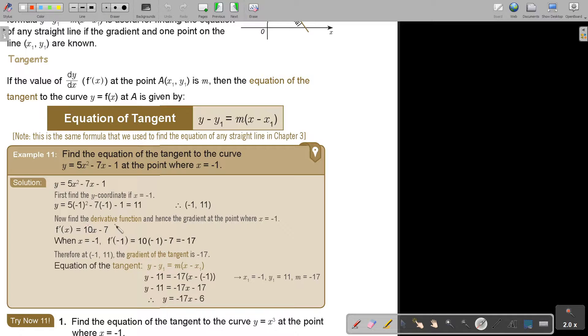Now find the derivative function. So we're going to differentiate and hence the gradient at the point where x is negative 1. So we differentiate and we get 10x minus 7. Then when x is negative 1 we substitute it and we get negative 17. Therefore at (-1, 11) the gradient of the tangent is negative 17.